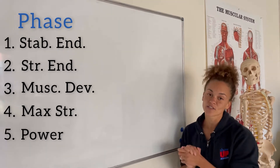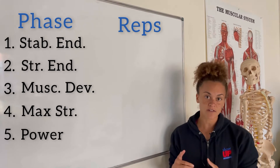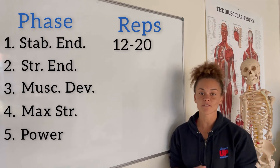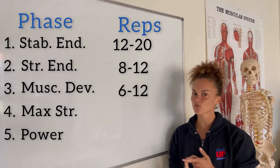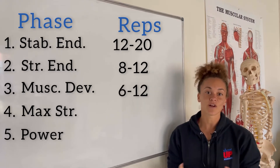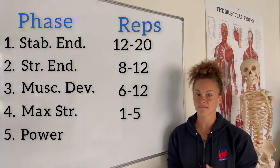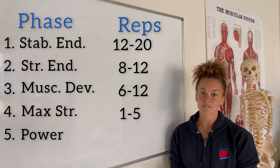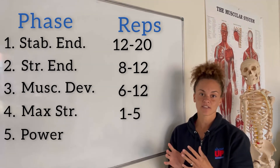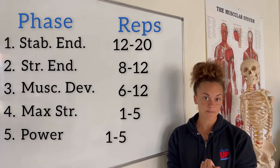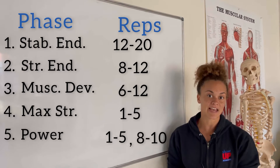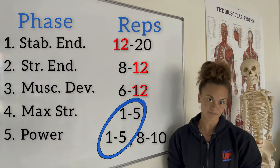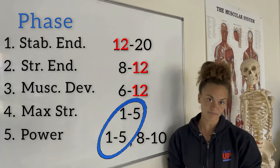Next, reps. For the most part, reps go down across phases. Phase 1: 12 to 20 reps. Phase 2: 8 to 12. Phase 3: 6 to 12. Phase 4: 1 to 5 reps. Phase 5 is a superset — the strength-focused exercise is 1 to 5 reps, and the explosive exercise is 8 to 10 reps. The first three phases all have 12 as part of the rep range, and the last two phases include 1 to 5 reps.